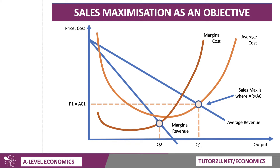Now, contrast that with profit maximisation, where marginal cost meets marginal revenue, which will be output Q2. That output allows the firm to charge a higher price, P2. Output is lower — you can move up the demand curve and charge a higher unit price.